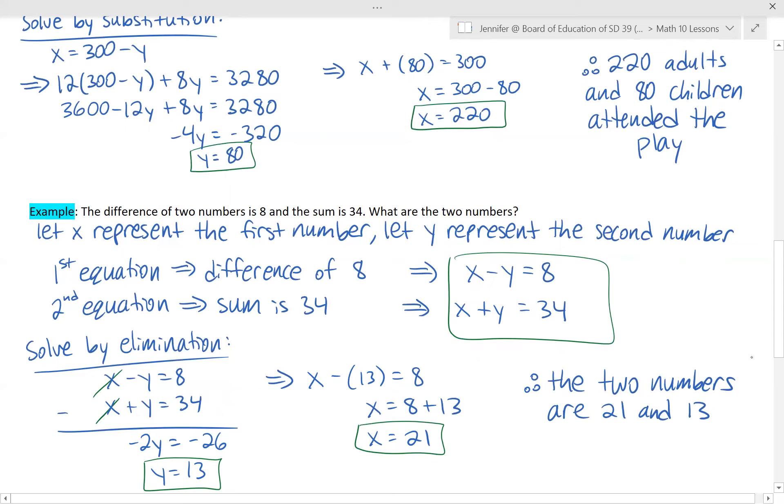Then you write a concluding sentence. The two numbers are 21 and 13. And you can very quickly check if this is correct. Is the difference between these 8? Yes, it is. Do these two add to 34? Yes, they do. So we're good.